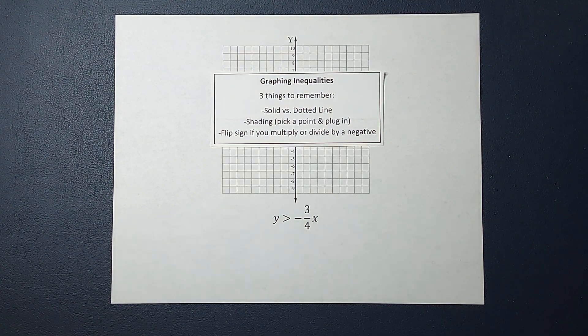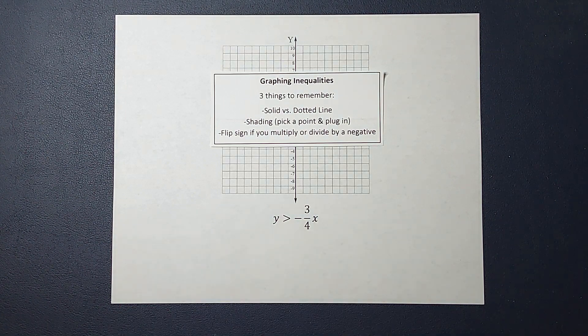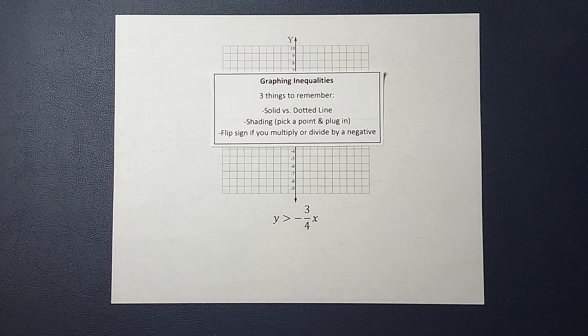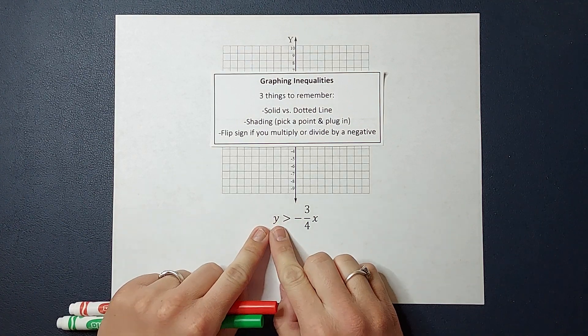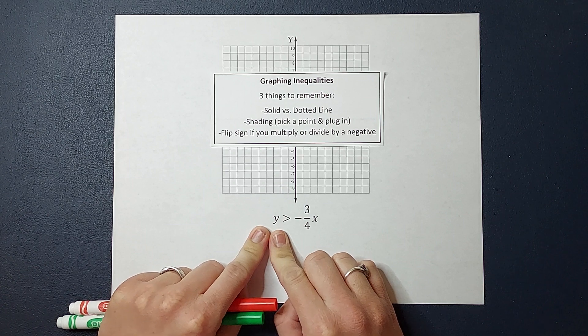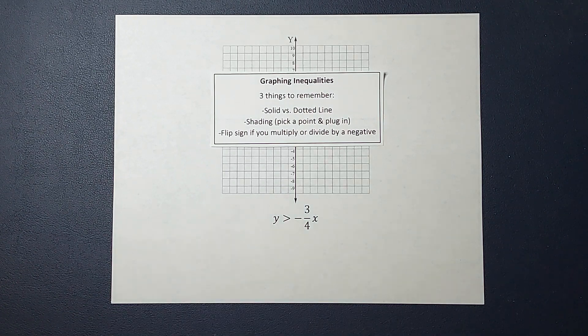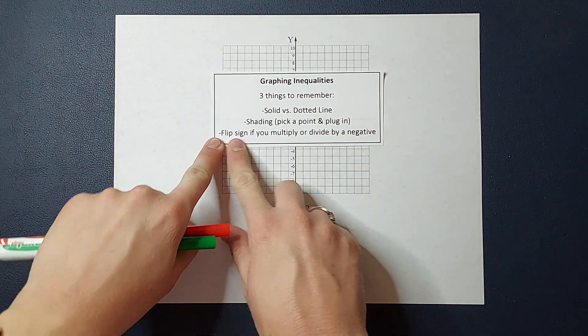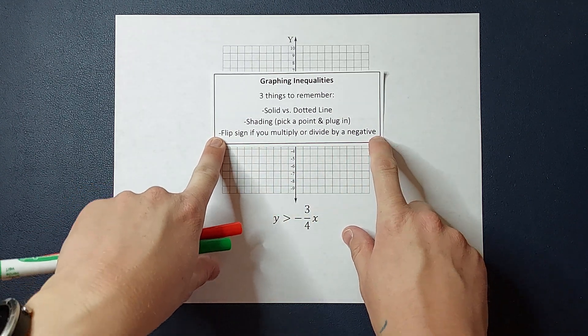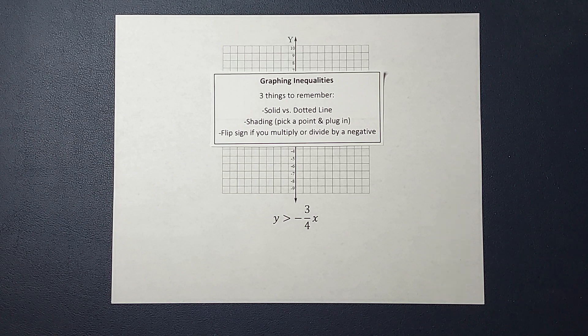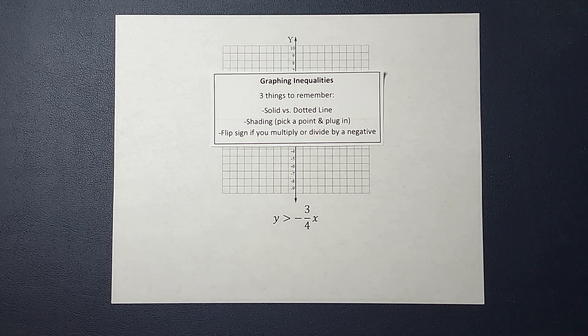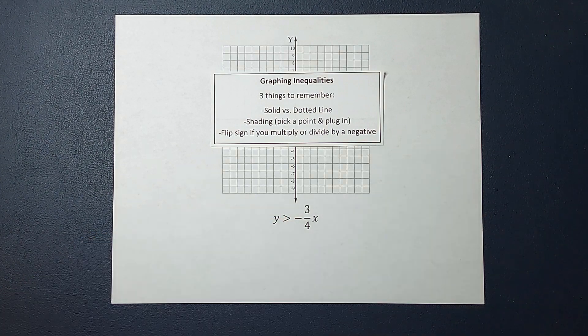First of all, my first goal when doing this is to get Y by itself because that's usually the easiest way to graph a line. And guess what? Y is already by itself in this case. Since I didn't have to change this inequality at all, I don't even have to worry about flipping the sign because I'm not going to multiply or divide by a negative. If you want to see an example where I do that, I will link one for you in the corner.